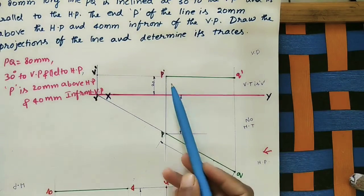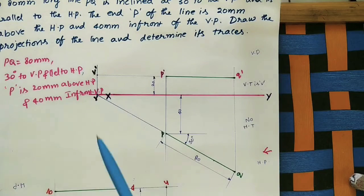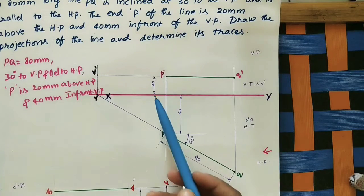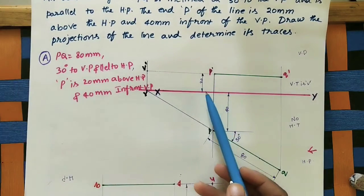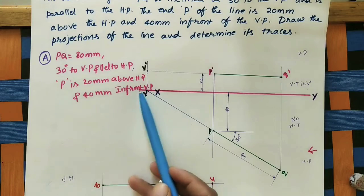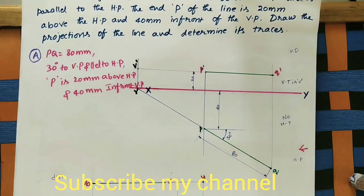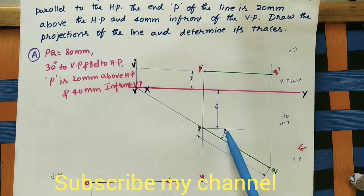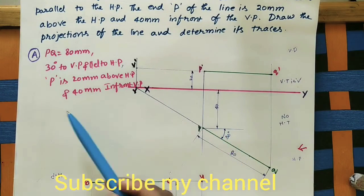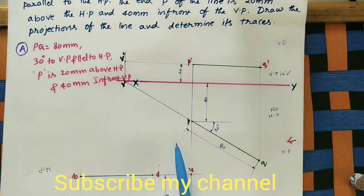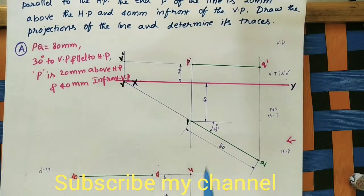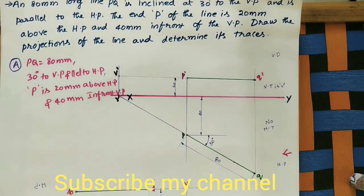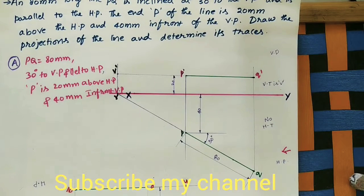Mark all the given dimensions: P is 20 mm above HP and 40 mm in front of VP, the line makes 30 degrees to VP, and line PQ is 80 mm. In this method we can mark the projections and traces. Thank you for watching.